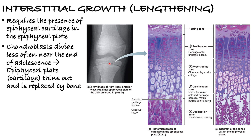The chondroblasts divide less often near the end of adolescence, and the epiphyseal plate will eventually thin out and be replaced by bone. If you haven't seen the video on endochondral and membranous ossification, make sure you go back and watch that. Now let's look at what's really going on in the epiphyseal plate zones.